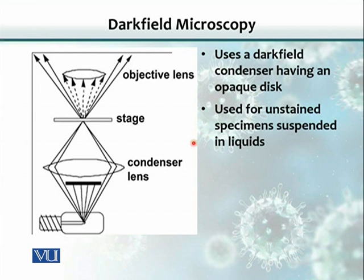The advantage of using dark field microscopy is that we don't have to stain the cells. Sometimes we use such microscopes — like dark field and phase contrast — without staining the cells, because staining with chemicals kills the organism. If we want to capture them alive or without disturbing their morphology, this provides a better tool.